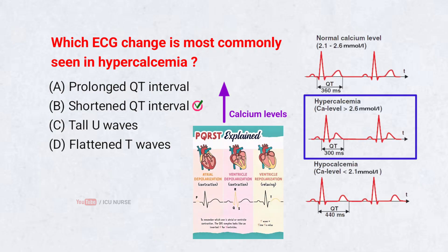Hypercalcemia speeds up ventricular repolarization, which shortens the QT interval on ECG. This is the classic and most reliable ECG sign of high calcium levels.